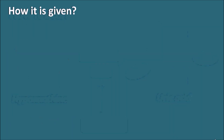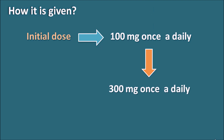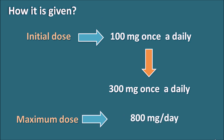How is it given? Allopurinol is given at an initial dose of 100 mg once daily, and the dose can be increased slowly on a weekly basis up to 300 mg once daily. According to the situation, the dose can be increased above 300 mg, with a maximum dose of 800 mg per day.